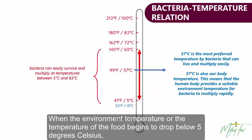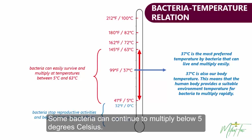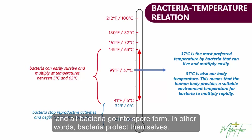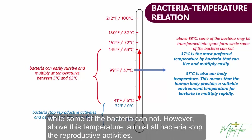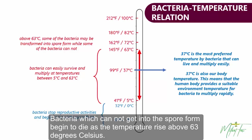When the environmental temperature or food temperature begins to drop below 5 degrees Celsius, bacteria stop reproductive activities and begin to turn into a dormant form. Some bacteria can continue to multiply below 5 degrees Celsius. As the temperature goes below 0 degrees Celsius, the reproductive activities of bacteria stop completely and all bacteria go into dormant form — in other words, they protect themselves. As the temperature rises above 63 degrees Celsius, some bacteria may transform into a dormant form while others cannot. Above this temperature, almost all bacteria stop reproductive activities, and bacteria that cannot enter a dormant form begin to die.